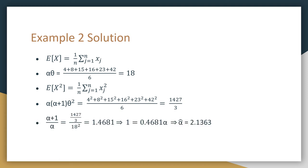To solve the system of equations, the easiest approach is to compute E[X²] divided by (E[X])², which causes terms to cancel, giving (alpha + 1) / alpha, equal to (1427/3) / (18²). Solving for alpha gives alpha-hat equals 2.1363. The easiest way to then solve for theta is to plug that estimated alpha value into the equation alpha times theta equals 18, and solve for theta. We get theta-hat equals 8.4259.